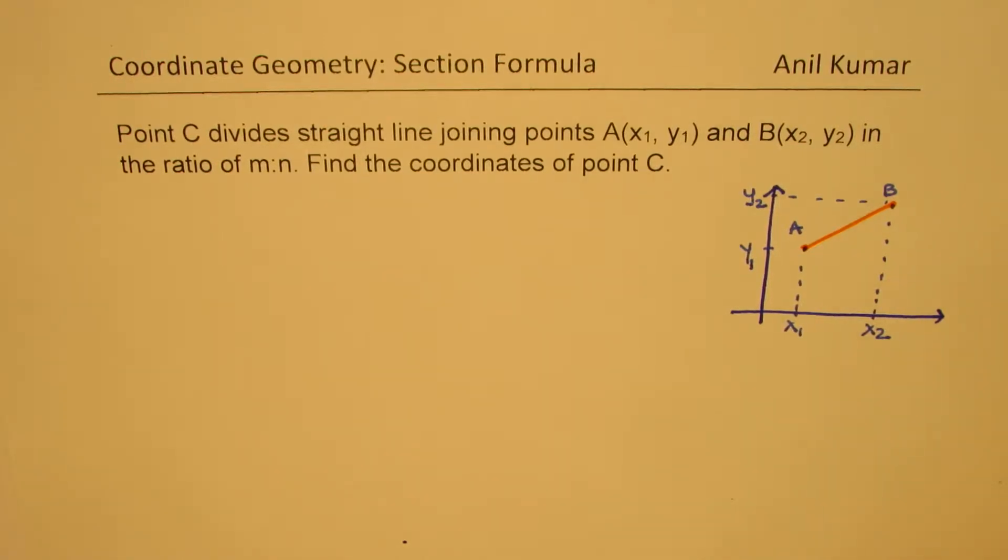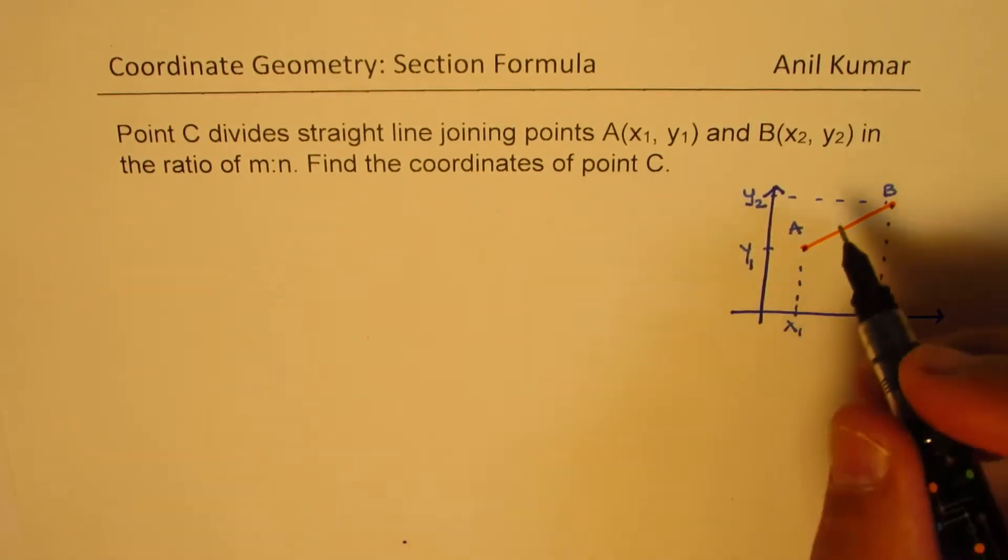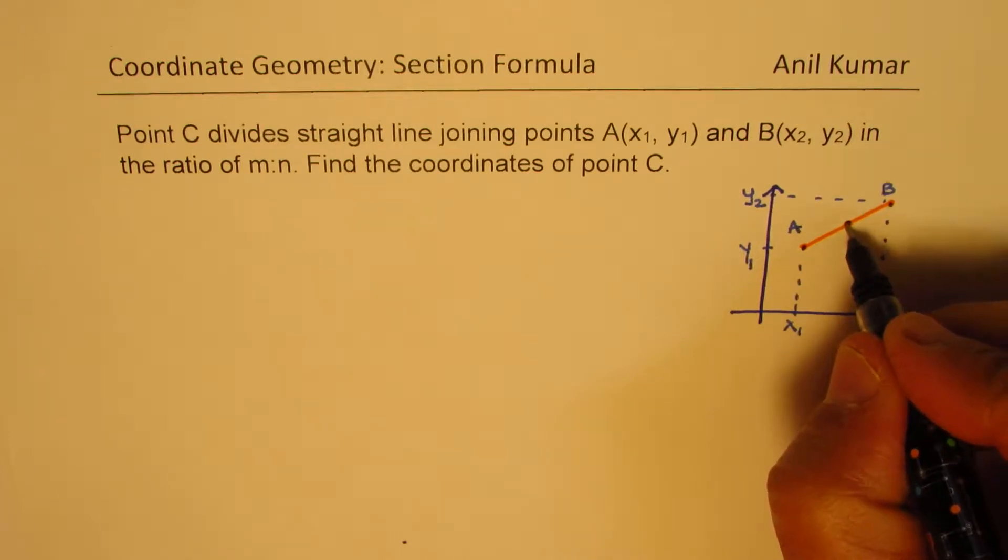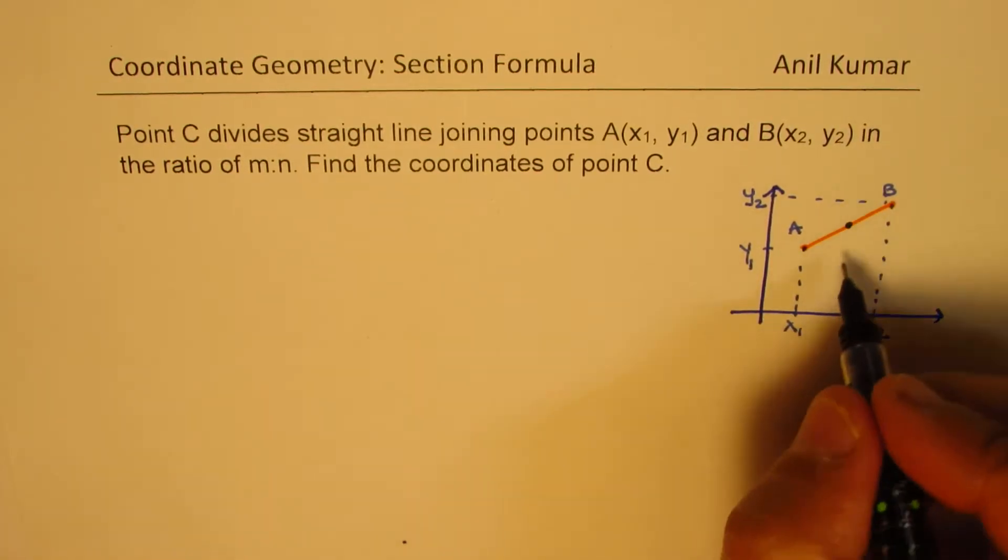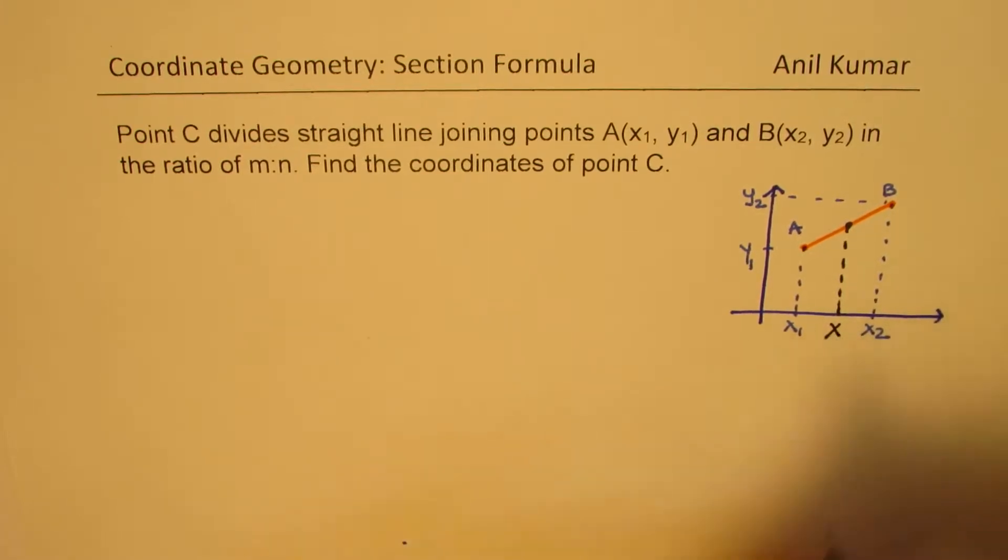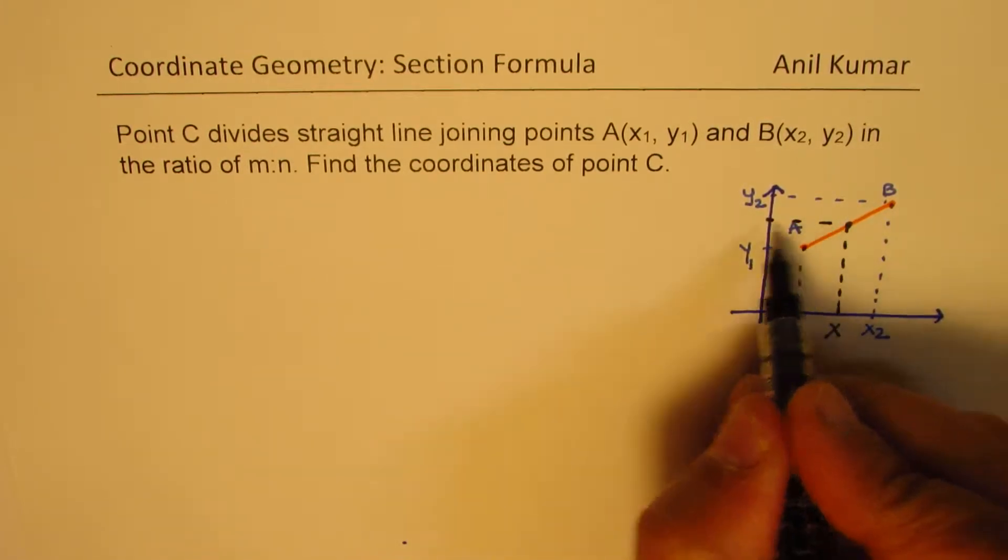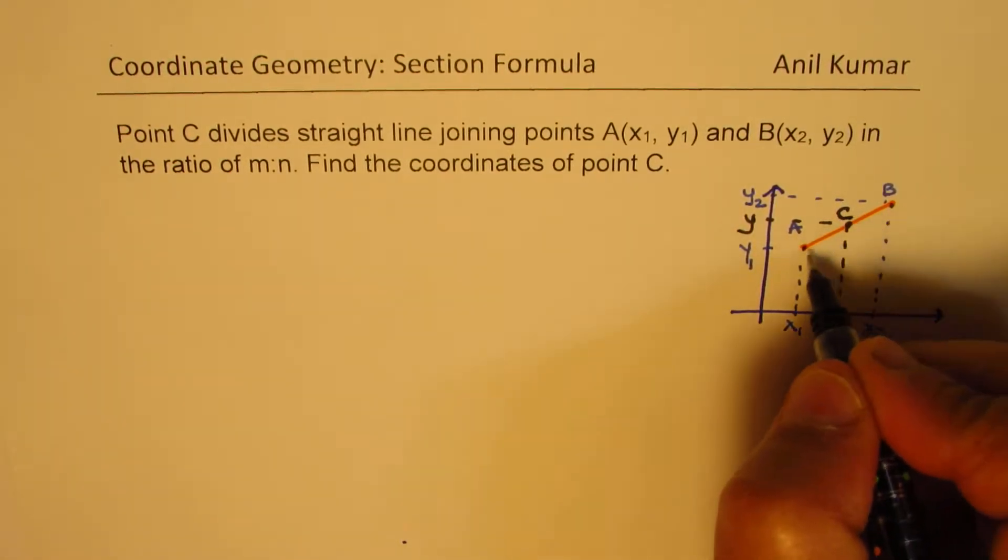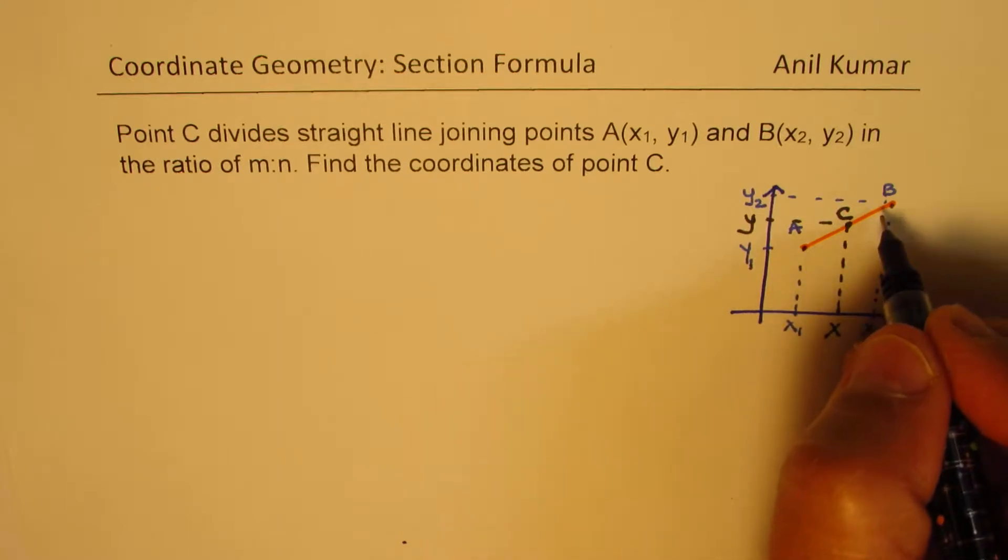What we are given here is a point C. We will assume for present point C being in between A and B. We call this as internal division. Let us say this is point C for us and we will assume this point at x and y. So this is the point C which divides the given segment in some ratio.